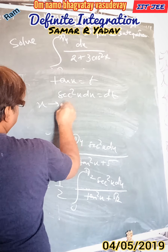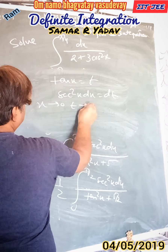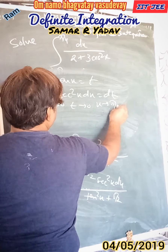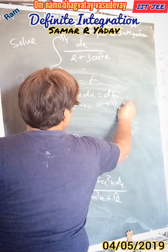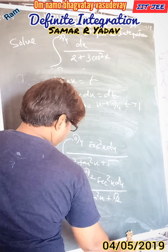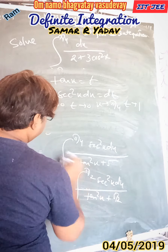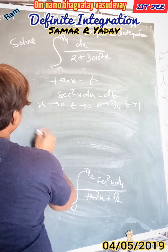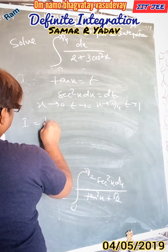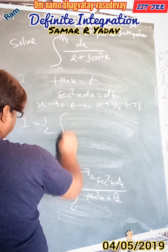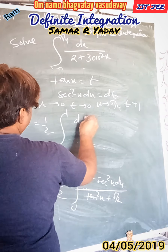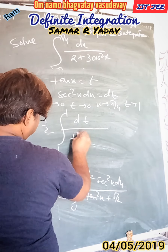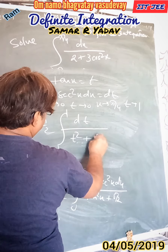Changing the limits: when x tends to 0, t tends to 0; when x tends to π/4, t tends to 1. Using this substitution, I is equal to 1 upon 2 times integration from 0 to 1 of dt upon t squared plus 5 by 2.